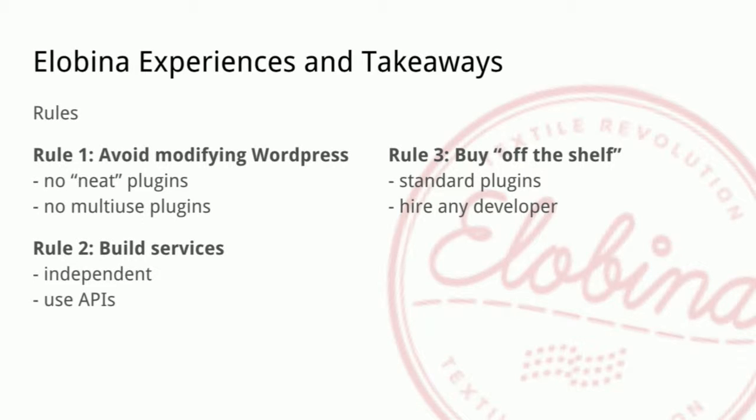Rule number three: buy off-the-shelf. Since we run a mostly unmodified version of WordPress — at least we don't modify it as much ourselves — that means we can buy any standard plugin that is available, or hire any standard WordPress or WooCommerce developer, because they don't need to know anything about our special case since there is none. This means the risk of conflicts between plugins is quite low, because we just use the standard and very popular plugins that many use together anyway. And that makes it easier to expand and keeps the cost of governance low.